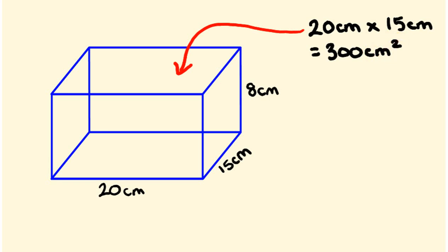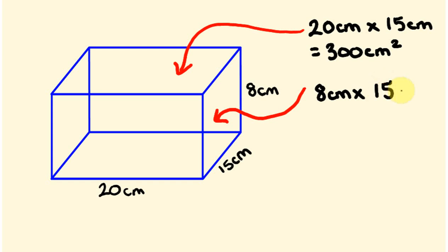The next one we're going to look at — we're not going to choose this one because it's identical to the first. So I'm going to choose one of the other sides. This is another rectangle, just on a bit of a slant. So this is also going to be area equals length times width. 15 times 8 is 120 centimeters squared.